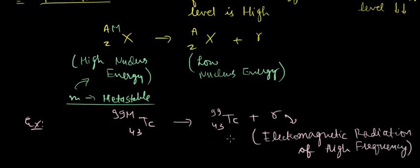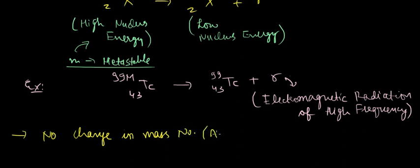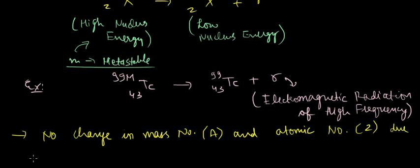Please remember that in the emission of a gamma particle, no change whatsoever takes place in mass number (A) or atomic number (Z) due to the emission of gamma radiation.